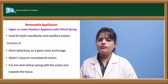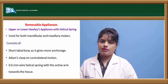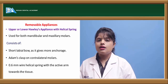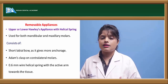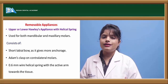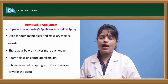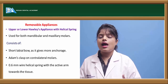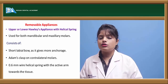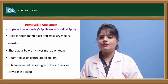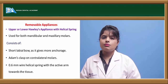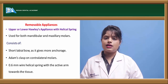The removable type of space regainer is the Hawley's type with a spring, and sometimes a Coffin spring can also be used. The Hawley type has a short labial bow, Adams clasps for retention, and a wire with a helical spring whose active arm is directed toward the tissue. This can be activated by compression.